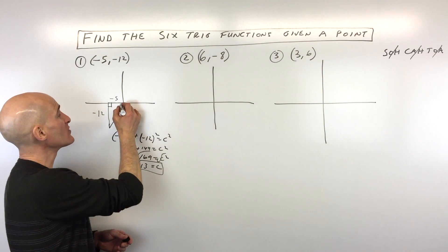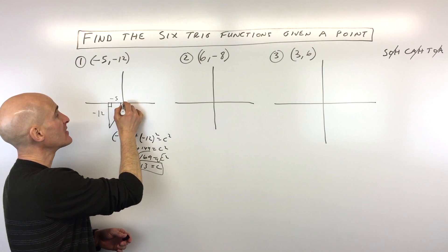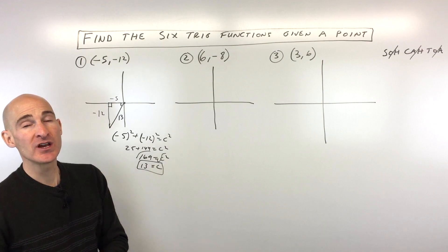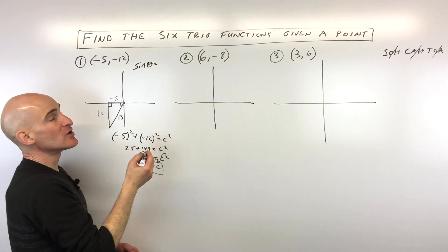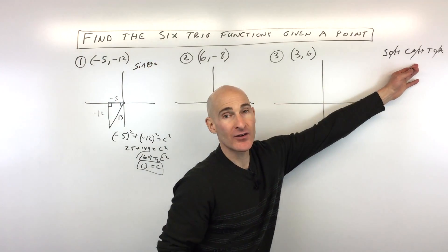So now that we've got our triangle, what we do is position ourselves here at the origin to find our ratios. So if we want to find the sine of theta, I'll just put it here, sine of theta. What we do is look at our SOHCAHTOA acronym to help us.